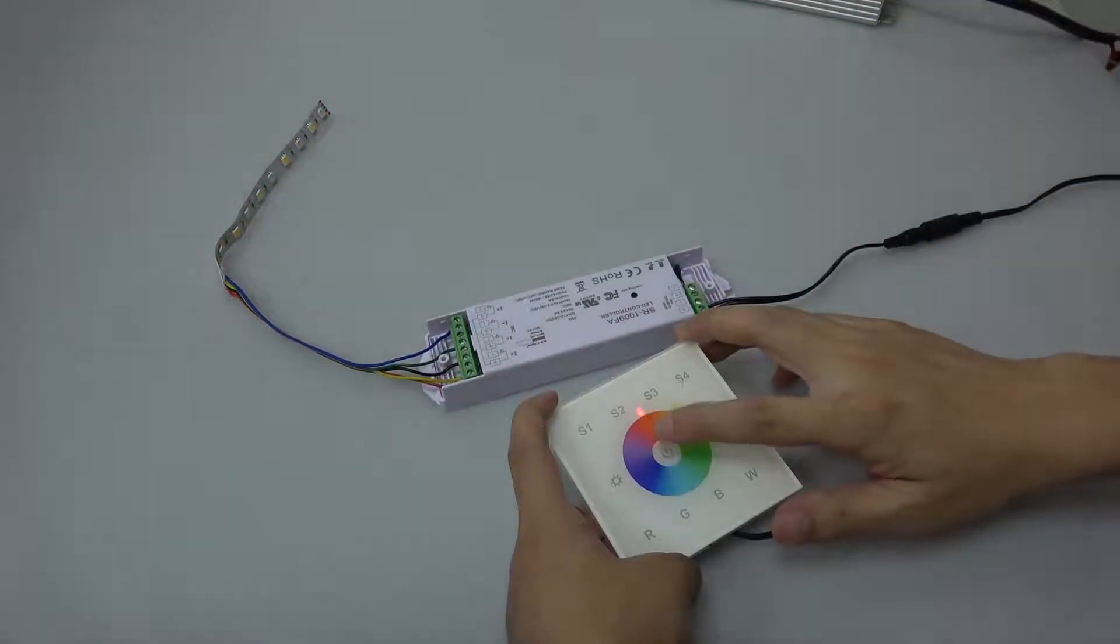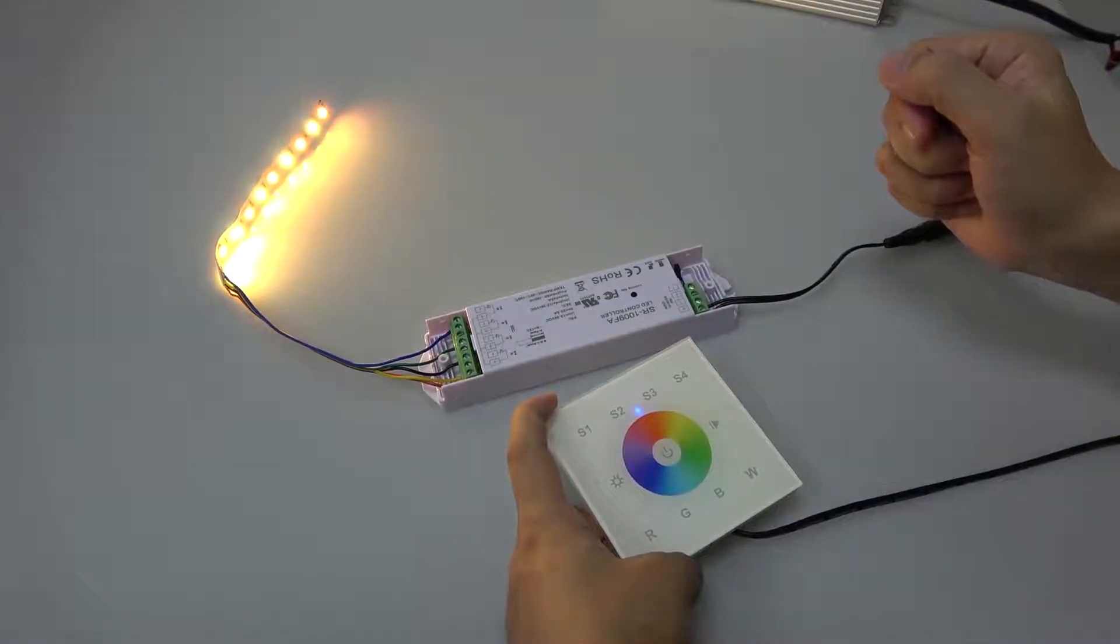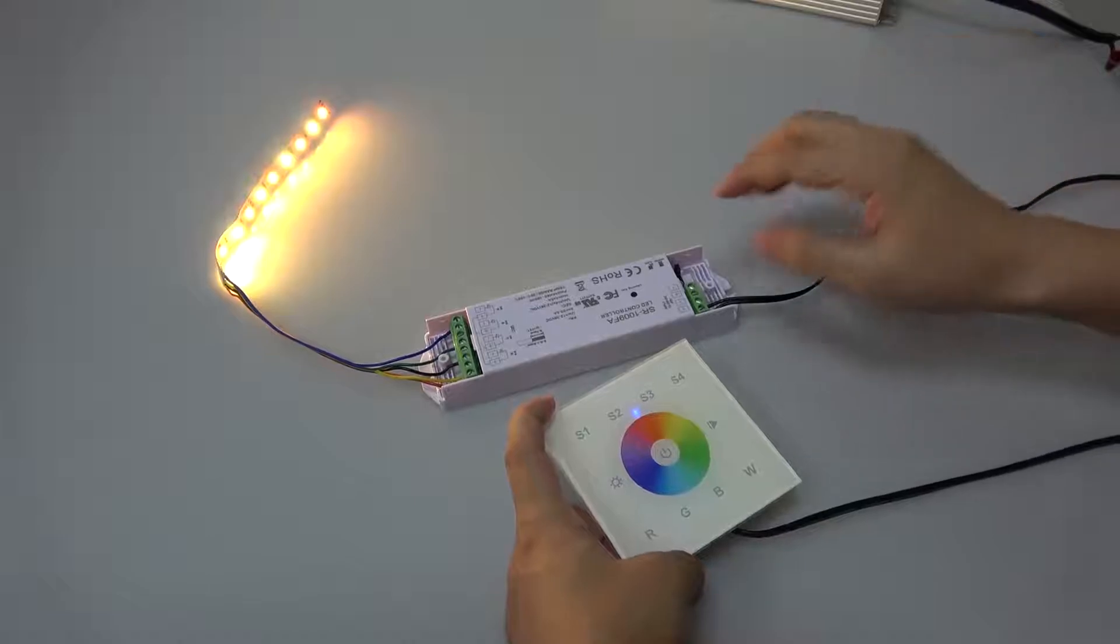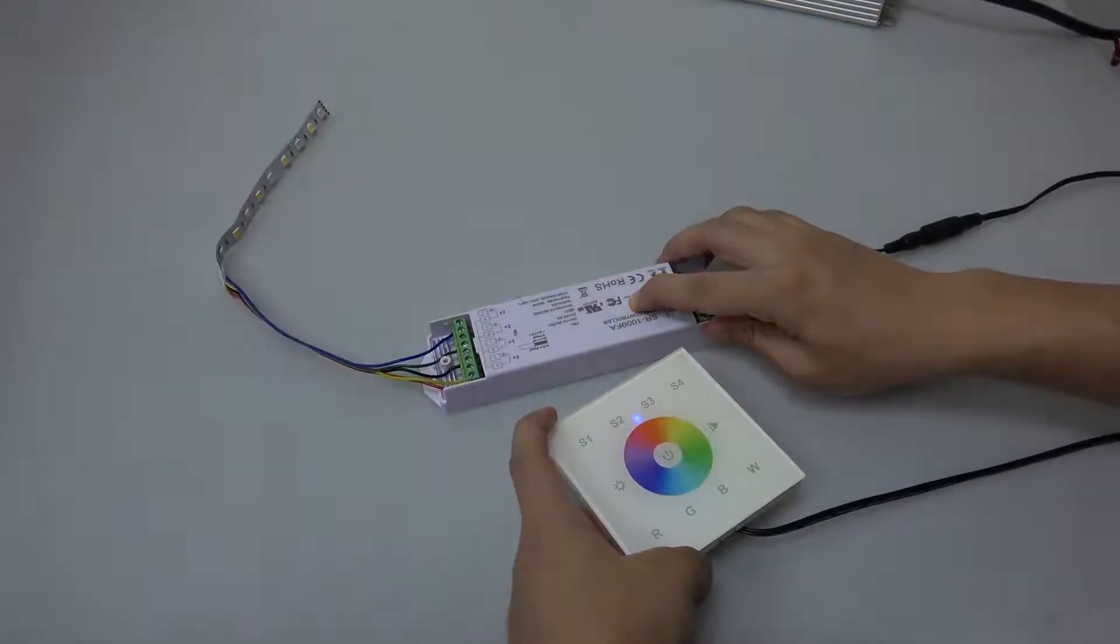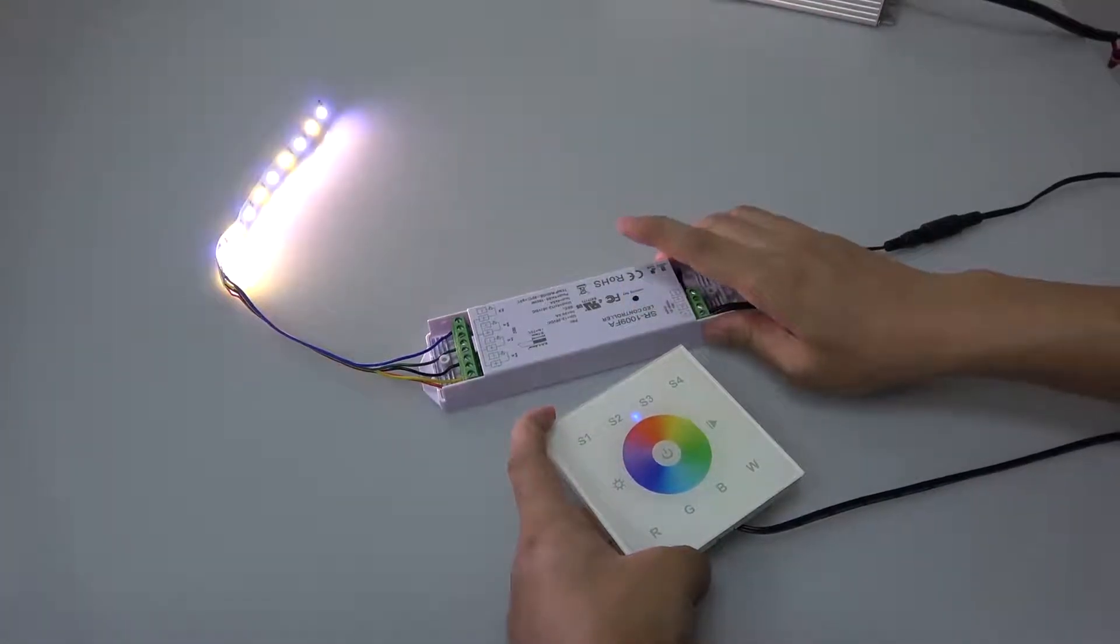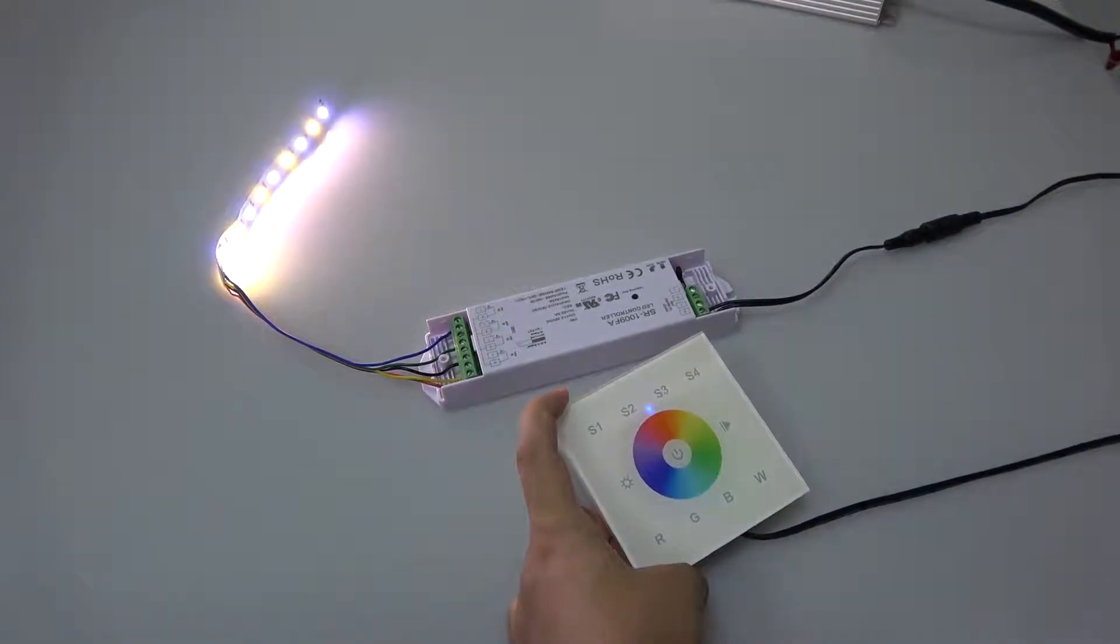To delete the pairing using the learning key, press and hold down the learning key on the receiver over three seconds. LED light flashes, which means the pairing is deleted successfully.